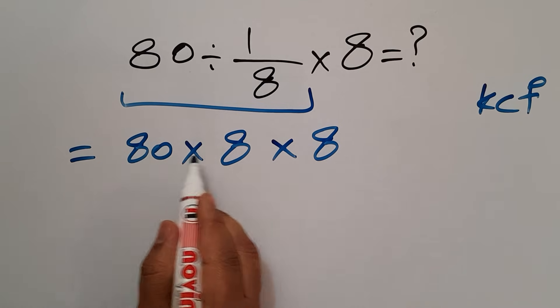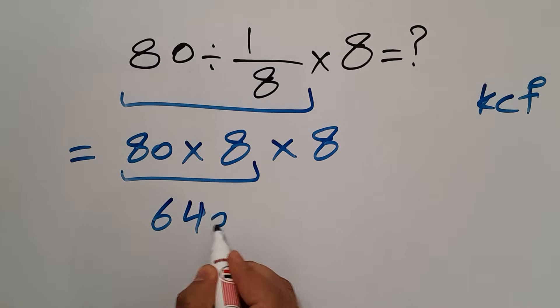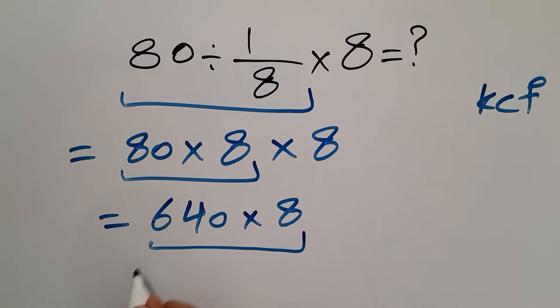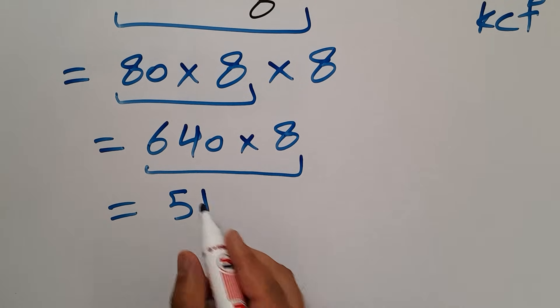80 times 8 gives us 640. So we have 640 times 8 which equals 5120.